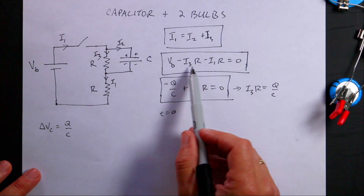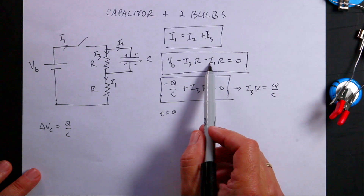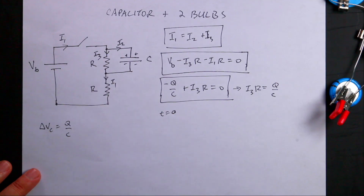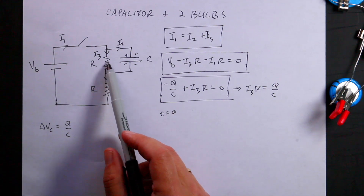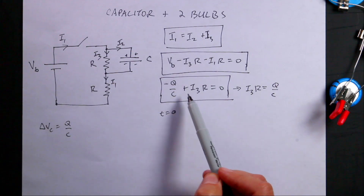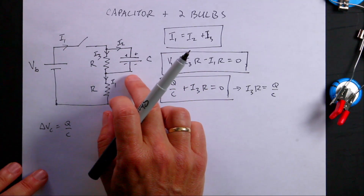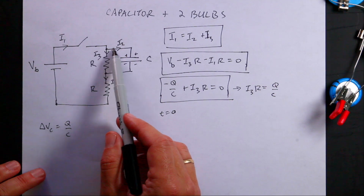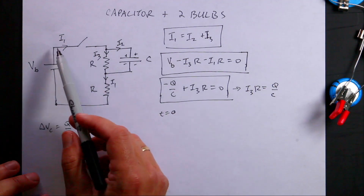As I3 increases, I1 has to decrease, because the loop equation has to be satisfied. So here's what happens: I close the switch — bulb one starts off, bulb two starts on. Bulb one gets brighter, bulb two gets dimmer. Eventually they reach a steady state with the same brightness, and I2 goes to zero. Another way to think about it: an uncharged capacitor acts like a short, so all current bypasses that resistor. Over a long time, a capacitor acts as an open circuit, so all current flows straight through.